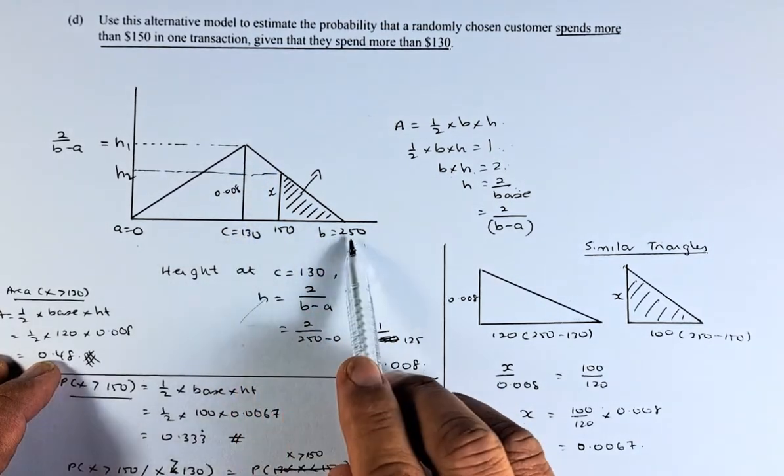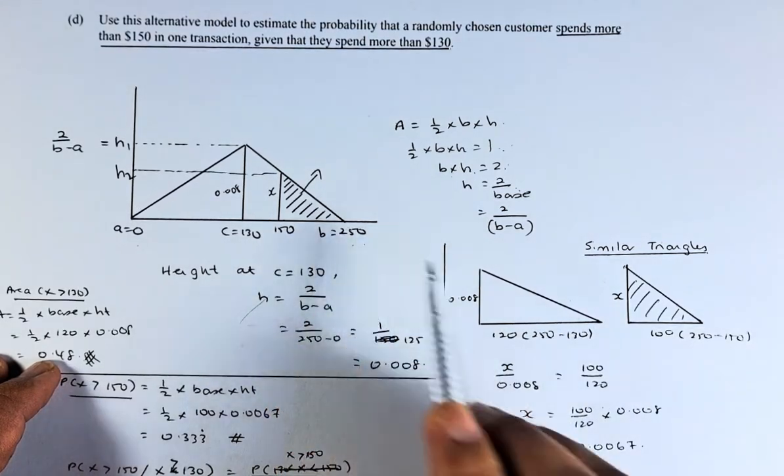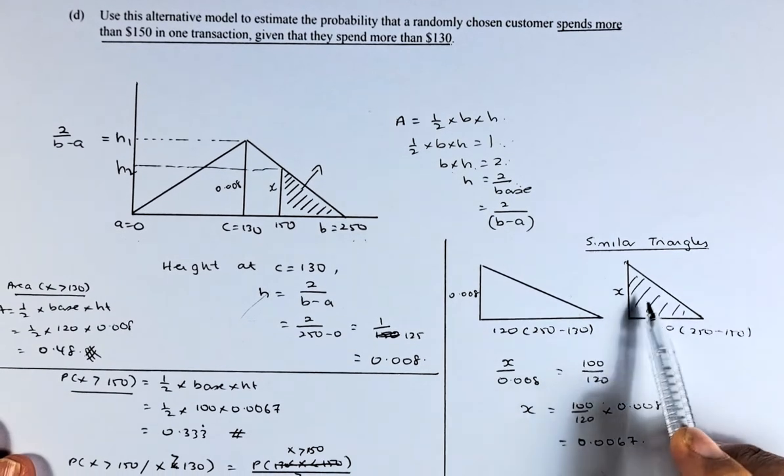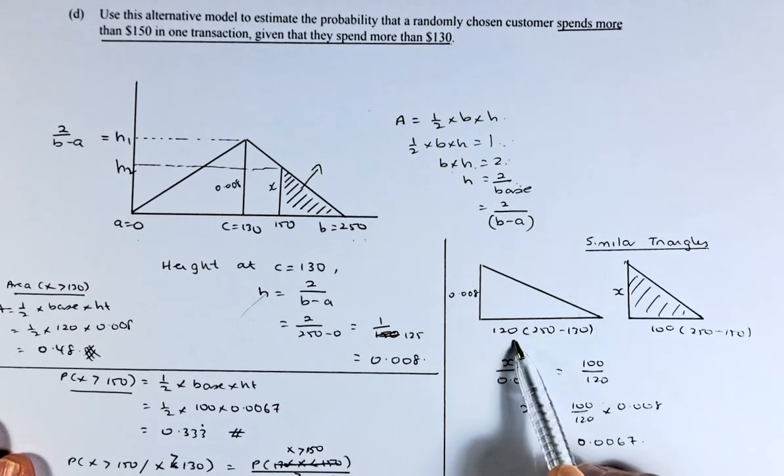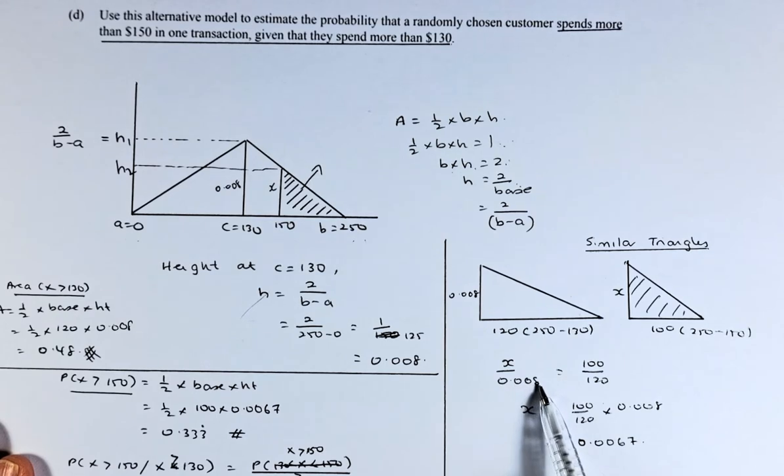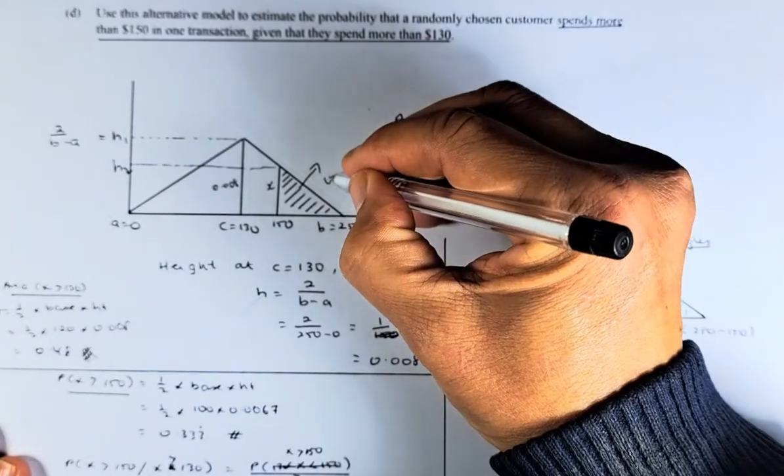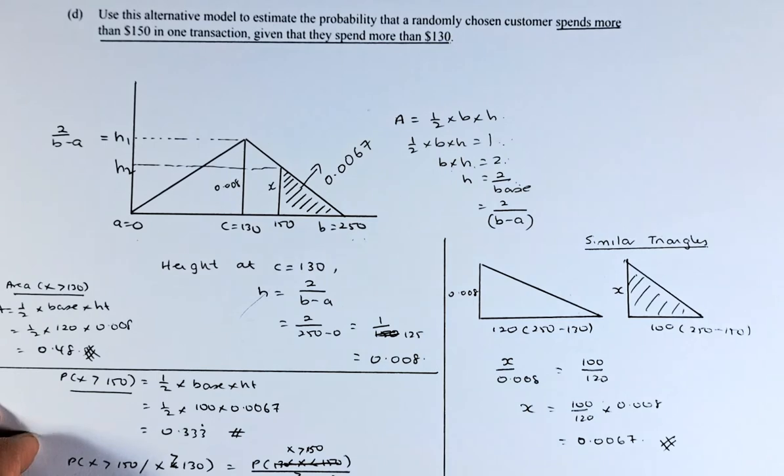This length from 150 to 250 is going to be 100. If you do similar triangles, we take the small triangle over the big triangle. So x over 0.008 equals 100 over 120. To calculate x, you multiply 0.008 on both sides. So x equals 100 over 120 times 0.008, and the answer comes up to 0.0067. So the area here is 0.006 recurring or 6-7 if you round it up.